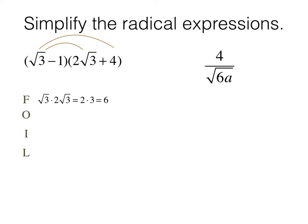Now the outside two is going to be simply the square root of 3 times 4, which we typically rewrite as 4 root 3. The inside two will be negative 2 root 3. And the last two terms multiplied together will be negative 4.